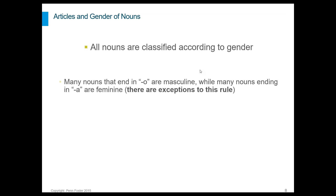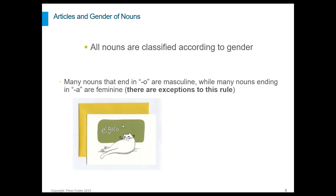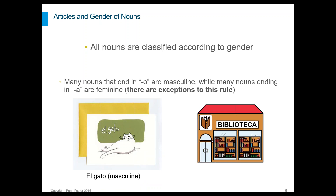The next part of the webinar is about articles and gender of nouns. In Spanish, all nouns are classified according to gender — masculine or feminine. The general rule of thumb is that many nouns ending in -o are masculine, and many nouns ending in -a are feminine. There are exceptions, but this can help with your translations. For example, el gato is a masculine noun meaning 'the cat,' versus la biblioteca, a feminine noun meaning 'the library.' In addition to the noun's ending, it will also be accompanied by an article — the word before it — which is often a clue for gender.